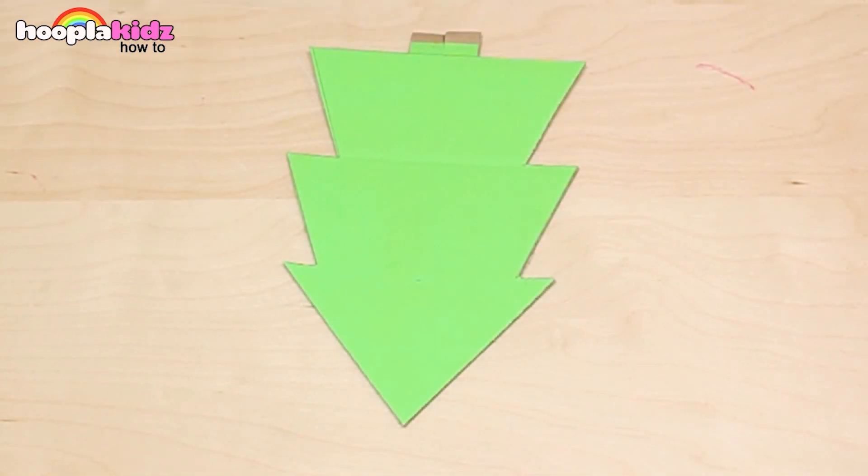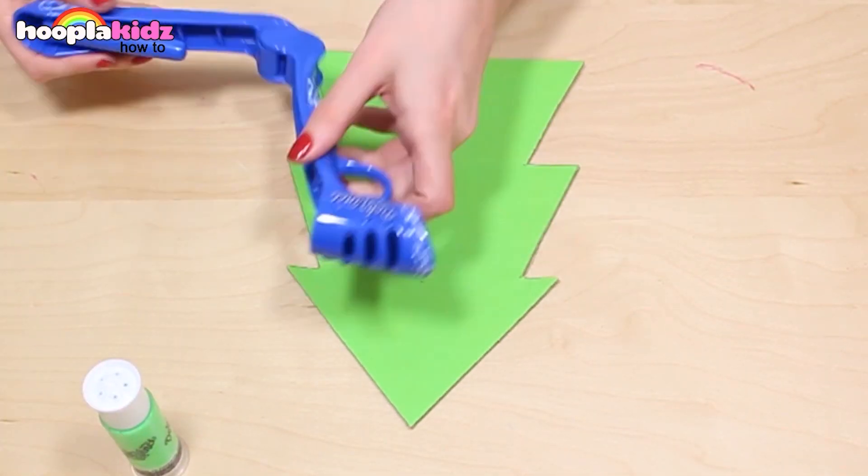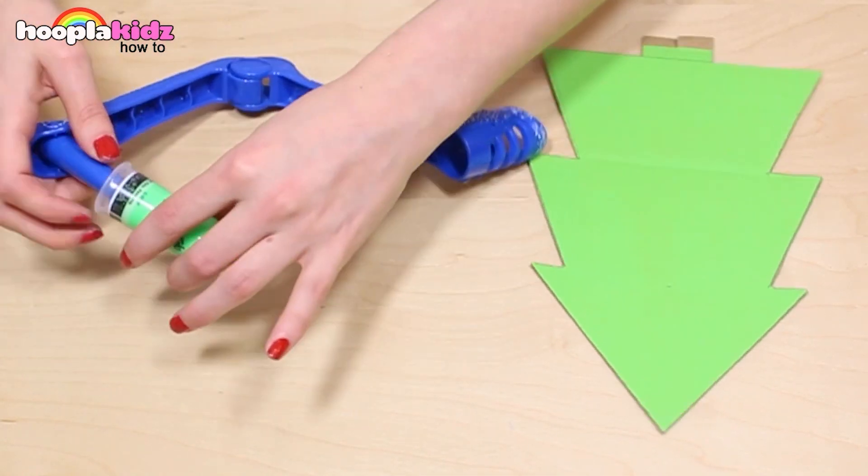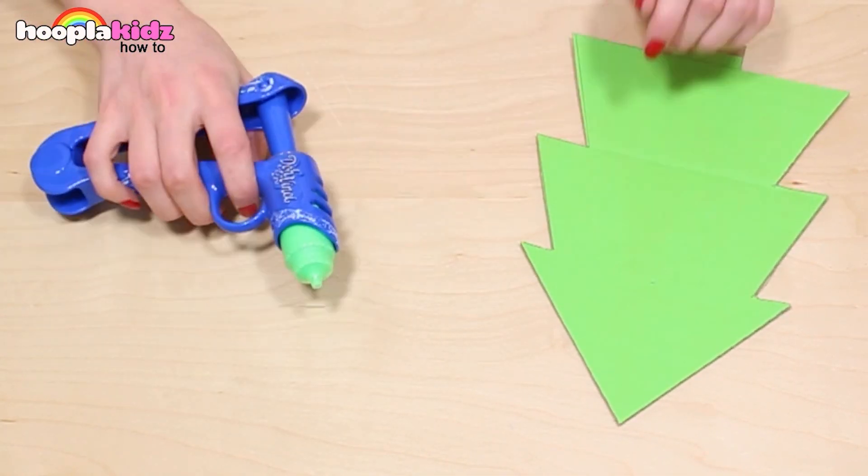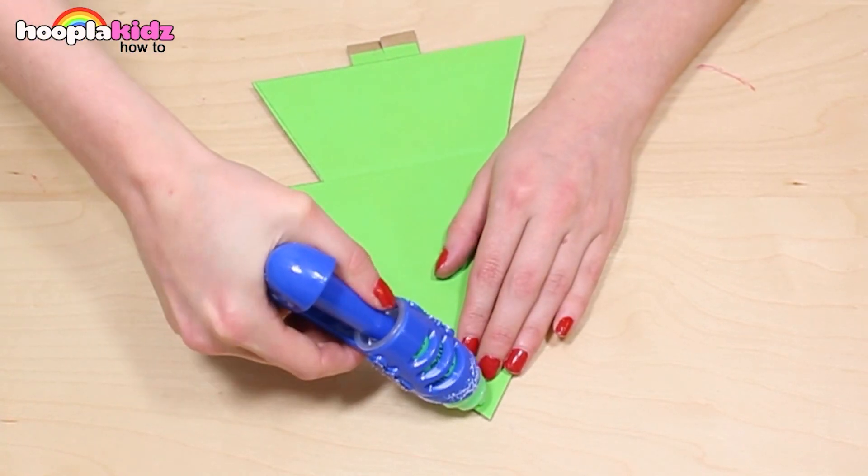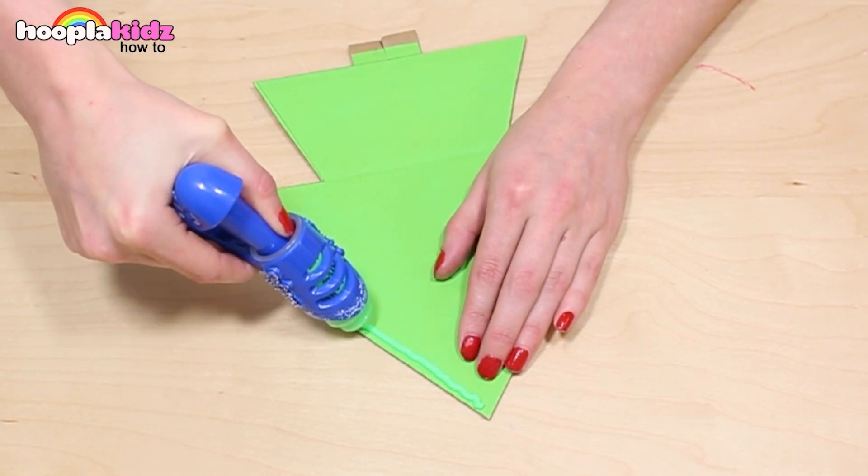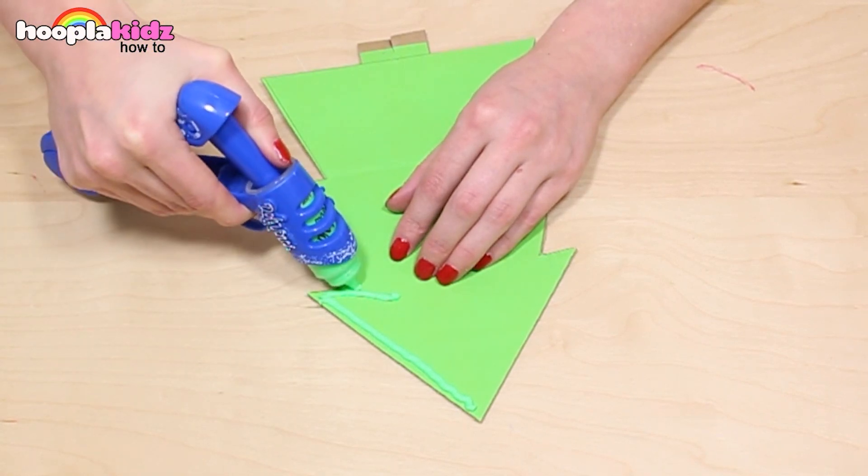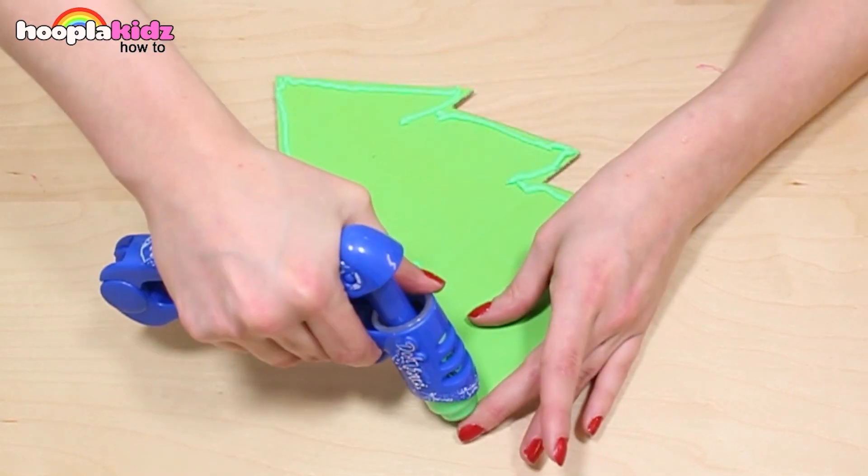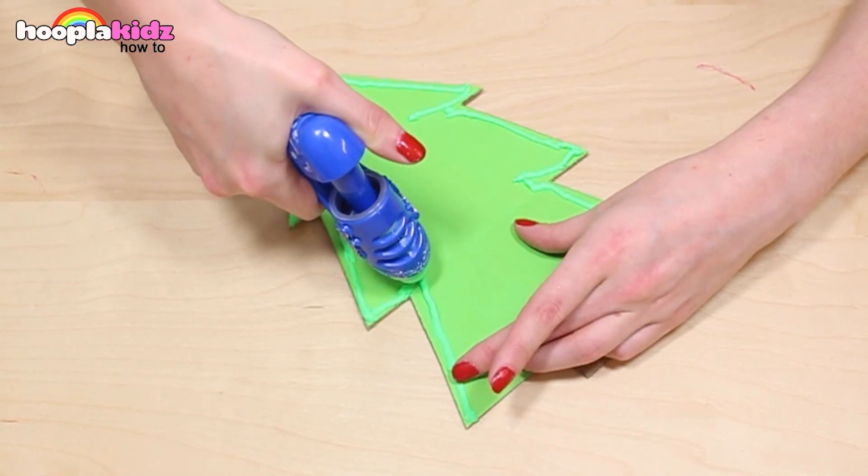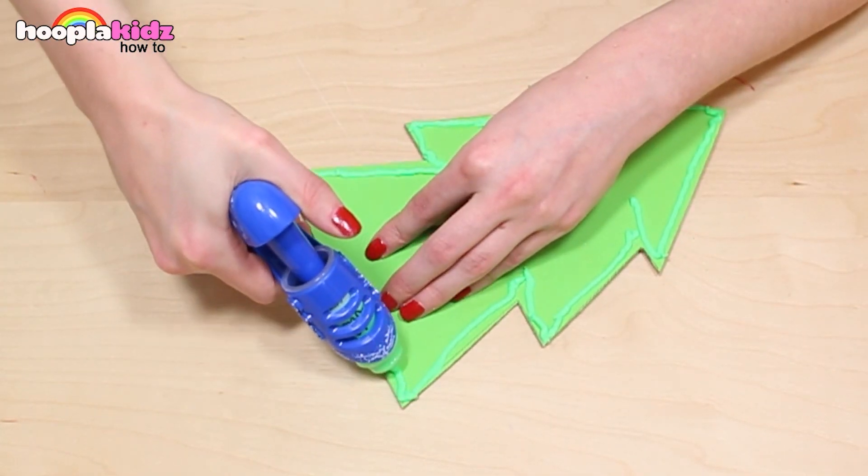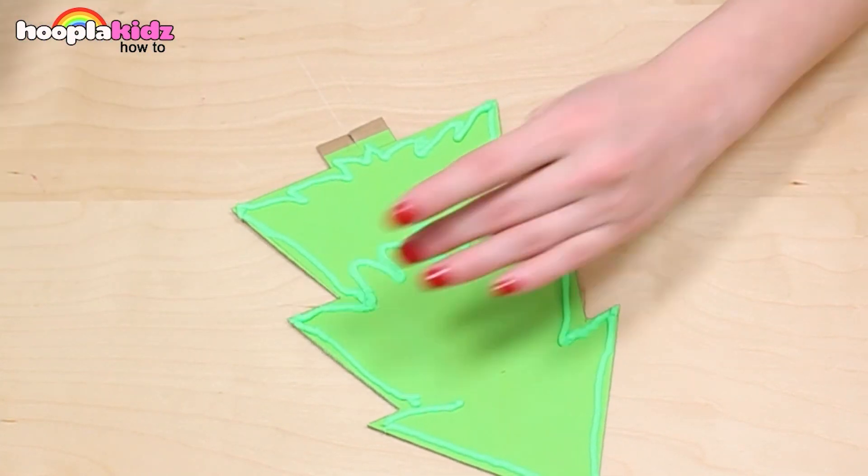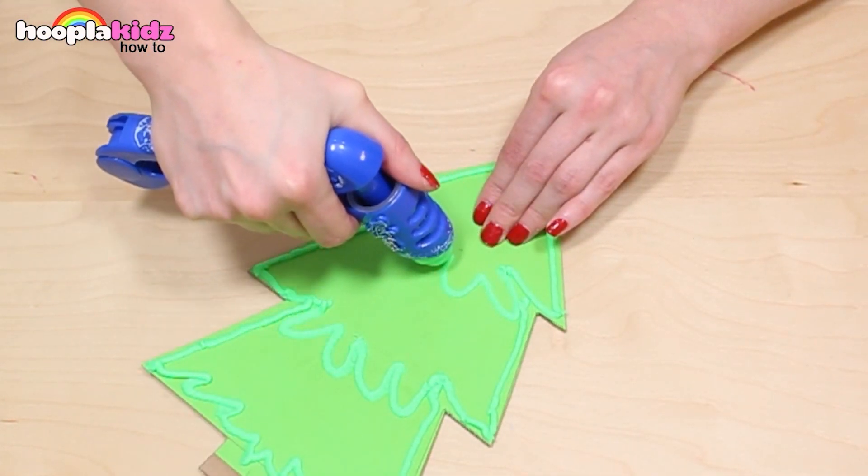Now time for the fun bit. I'm going to outline my tree with green using my DoVinci set and colors. This gives an awesome 3D effect. I'm also adding detail to the middle by doing a zigzag.